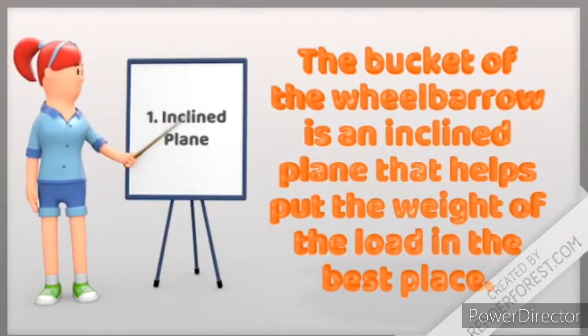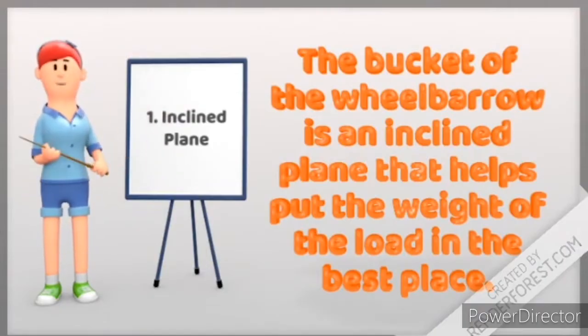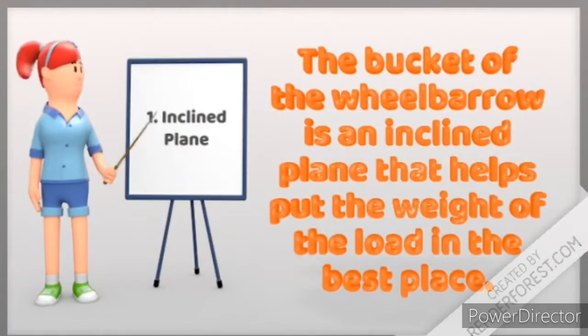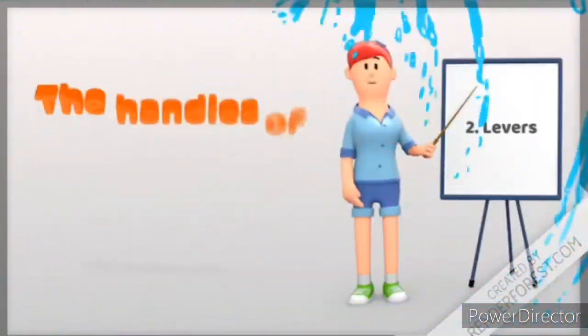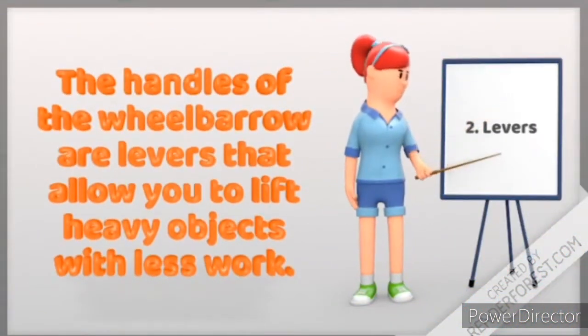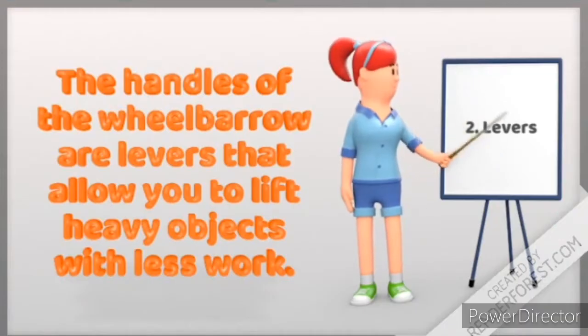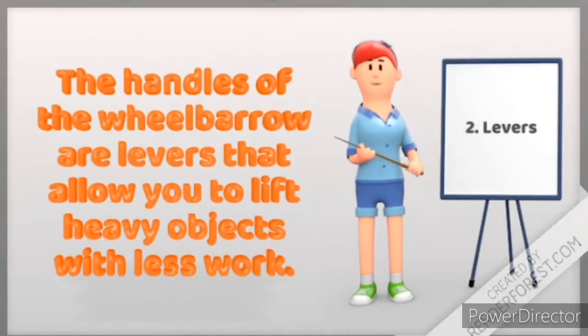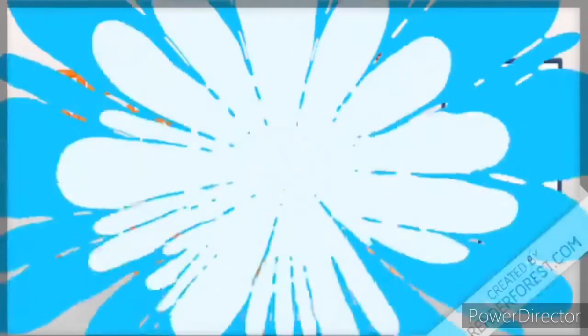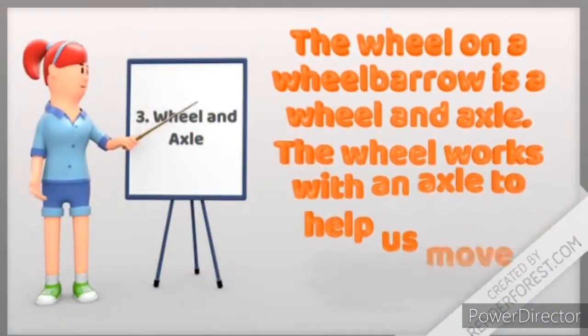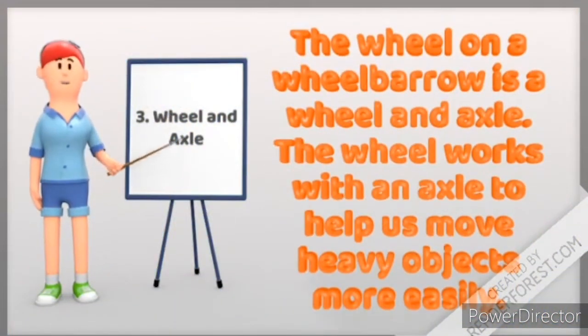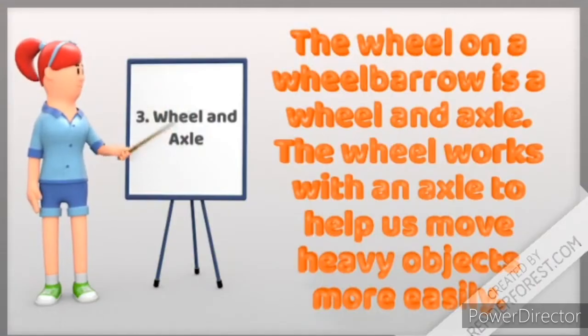Number two, the handles of the wheelbarrow are levers that allow you to lift heavy objects with less work. And three, the wheel on a wheelbarrow is a wheel and axle. The wheel works with an axle to help us move heavy objects more easily from one place to another.